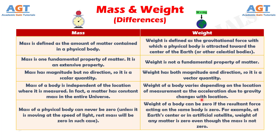Number 5: Mass of a physical body can never be zero — unless it is moving at the speed of light, in which case rest mass will be zero — whereas weight of a body can be zero if the resultant force acting on the body is zero. For example, at Earth's center or in an artificial satellite, the weight of any matter is zero even though the mass is not zero.